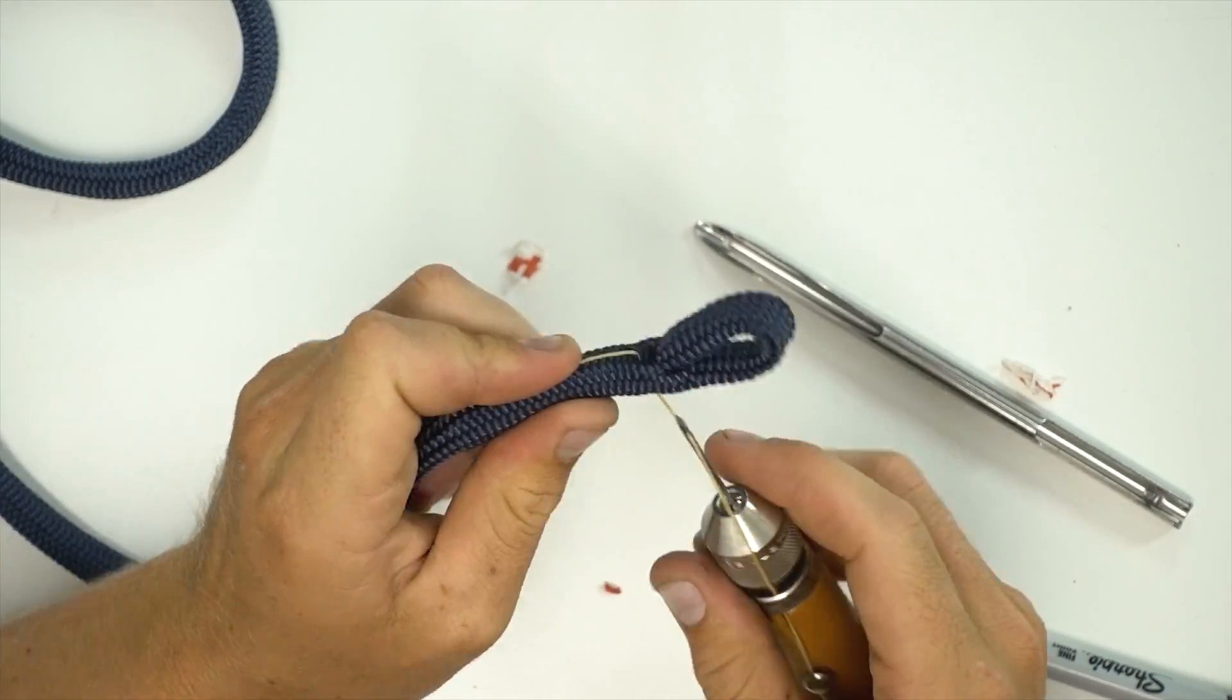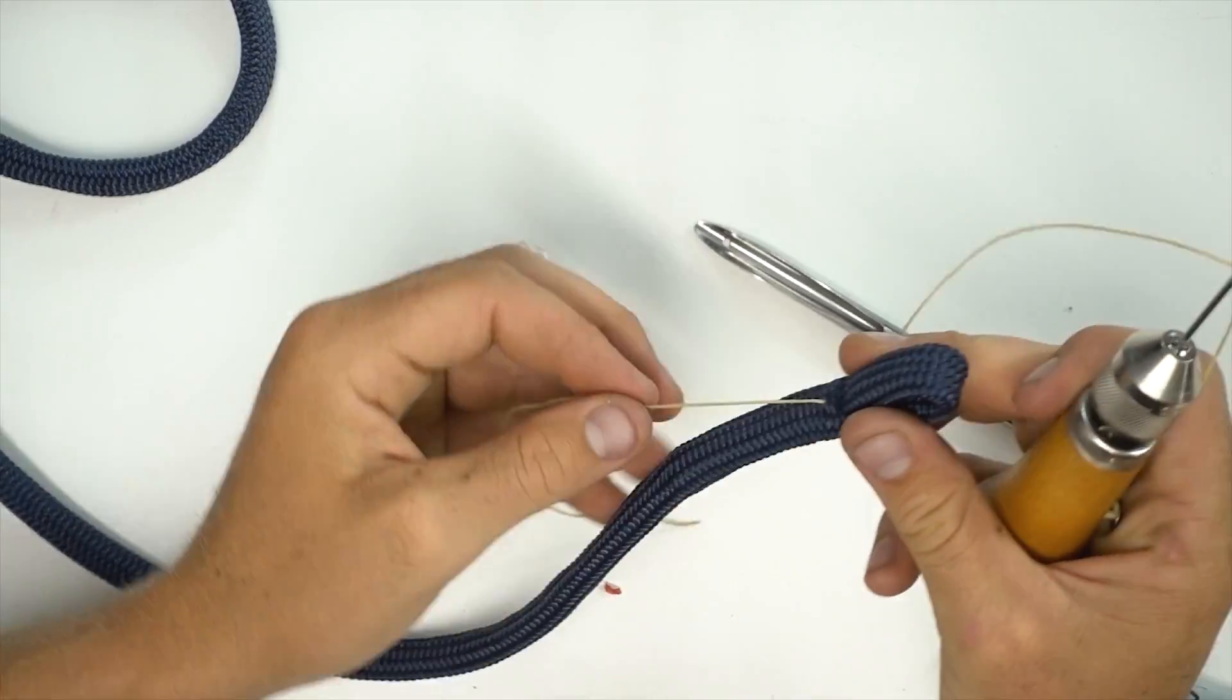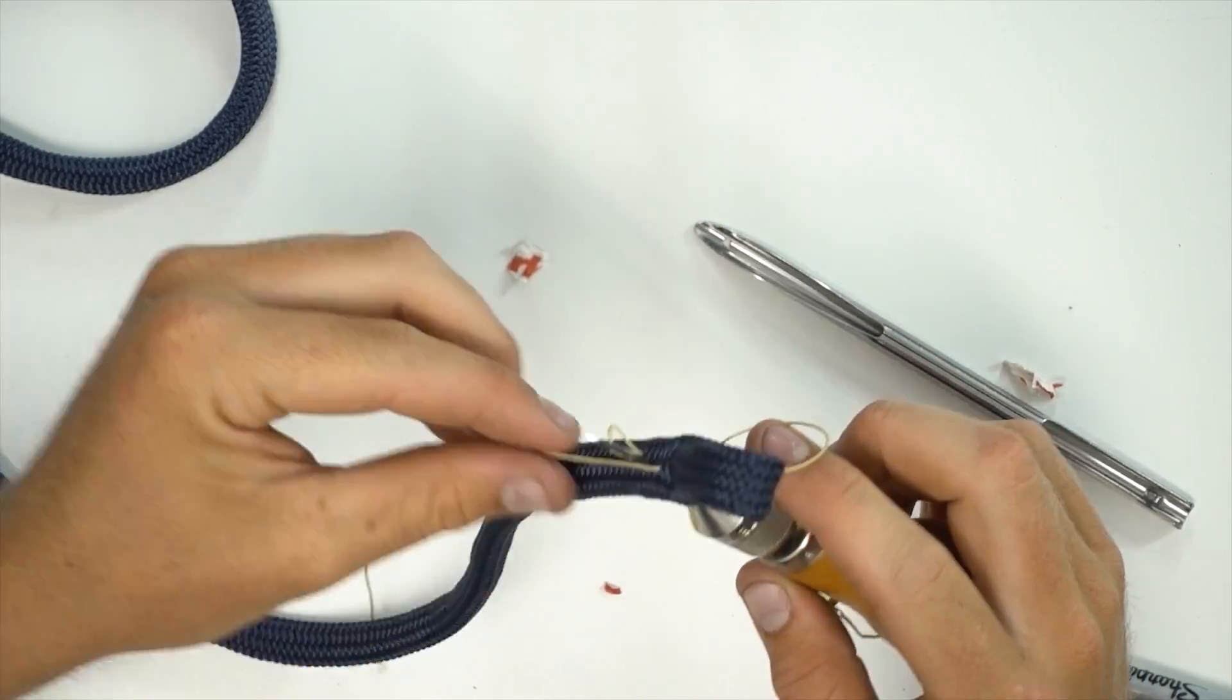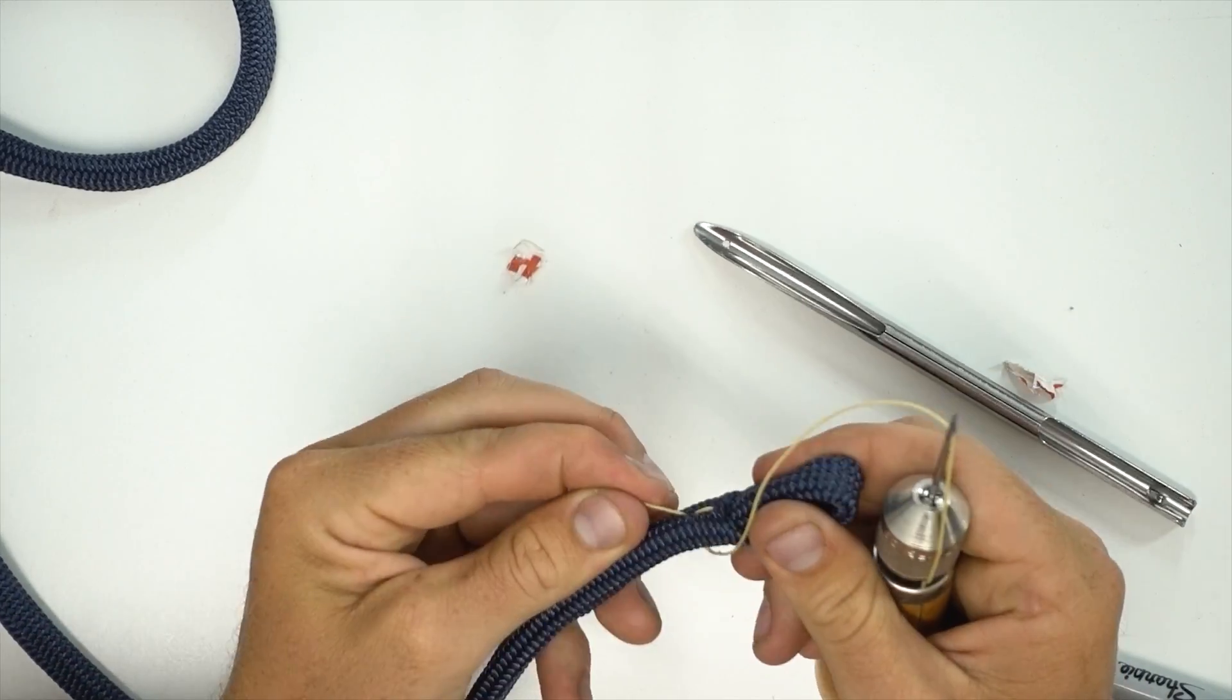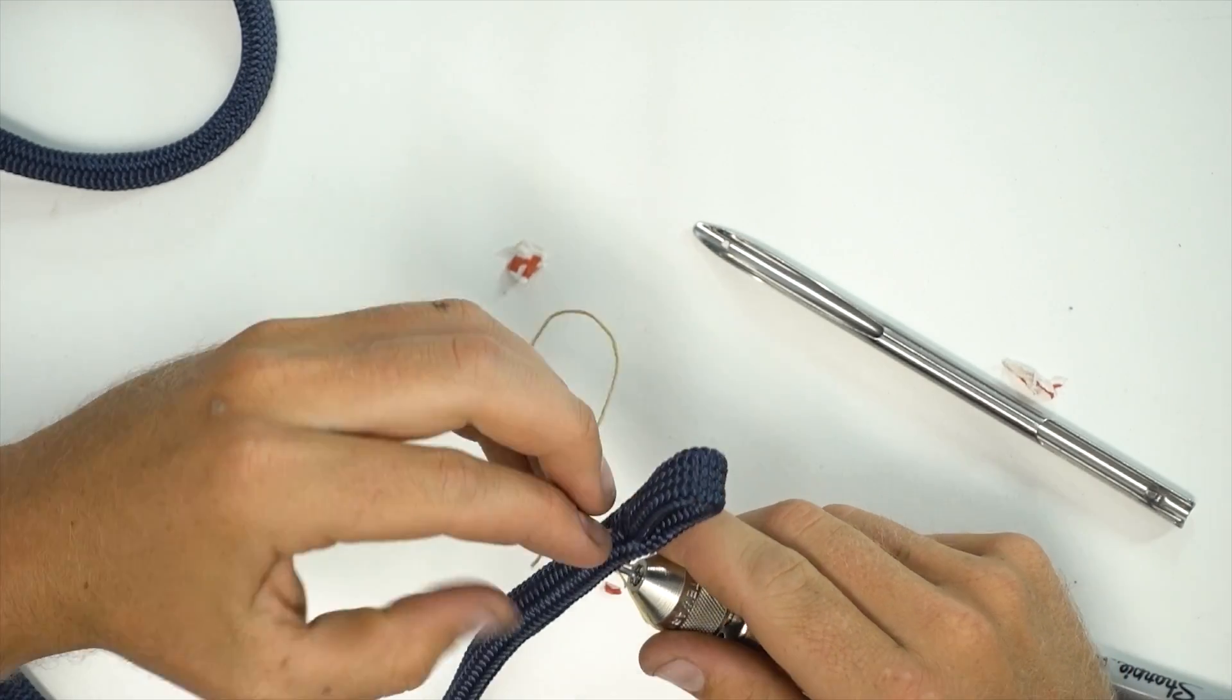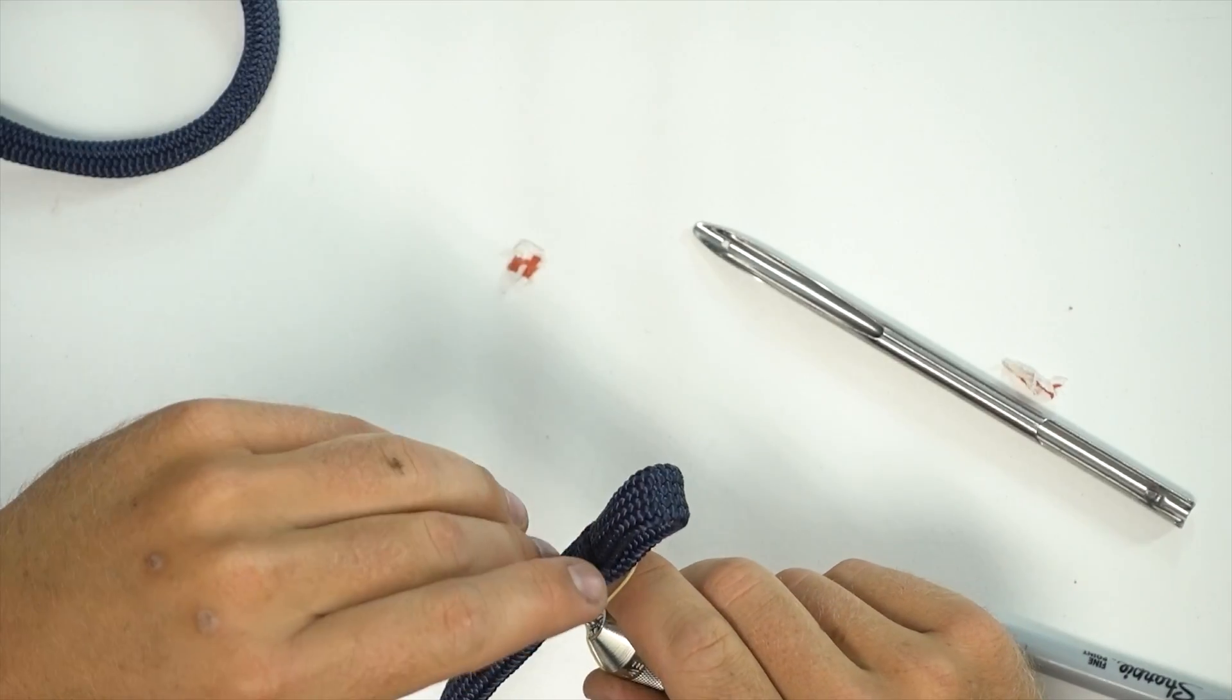Now the key here is to stitch both the reaving splice as well as the core and cover together leading up to the reaving splice. That way at no point will the rope ever work itself to a point where there is a gap in between the two of just cover.